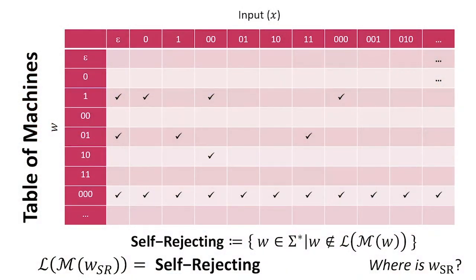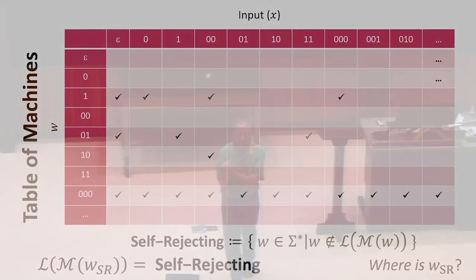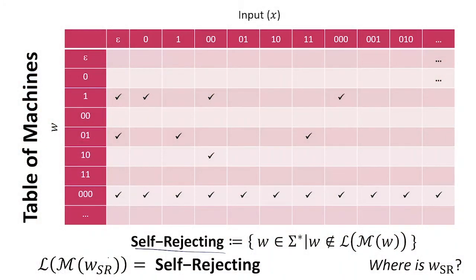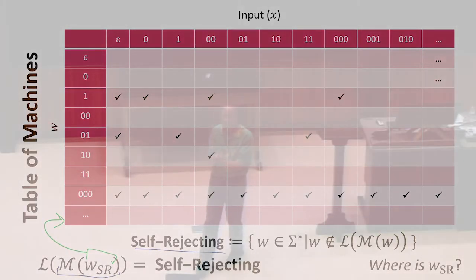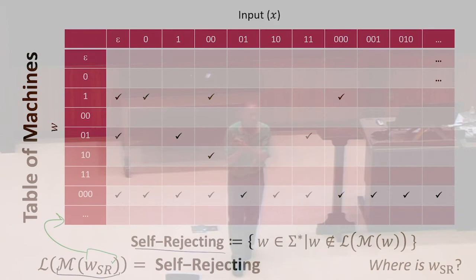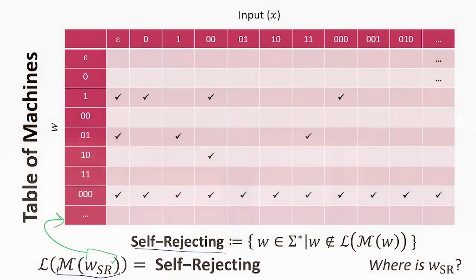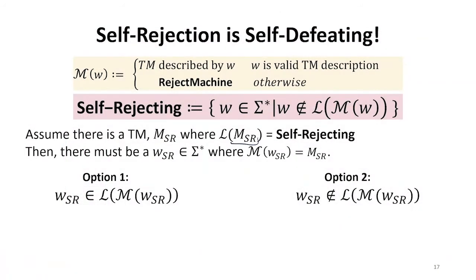If we can compute self-rejecting, that means there's some Turing machine that can decide this language — and that means there's some string representing that machine, which must be somewhere in this table, that computes the self-rejecting language. So what should the value on its diagonal be? We'll call MSR the machine that computes self-rejecting, and WSR the string of zeros and ones representing it. Is WSR in self-rejecting? That's a binary question — either it's in the set or it's not.